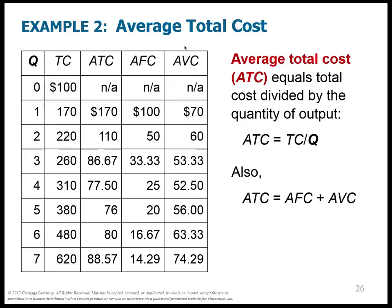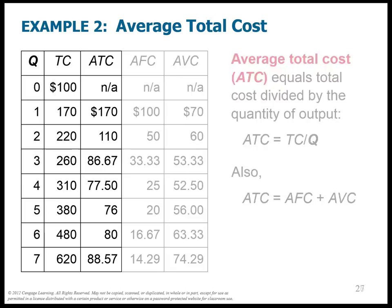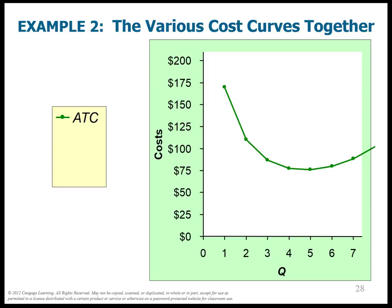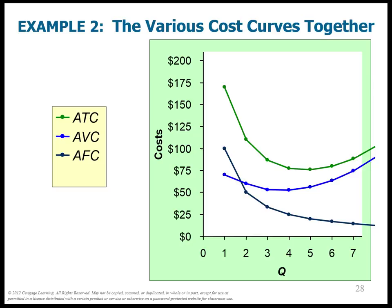The ATC curve is U-shaped as well. Let's put the AVC curve on the same graph. Remember, the difference between AVC and ATC at any point is the average fixed cost — and notice it's getting closer and closer together because the average fixed cost is decreasing. Adding the marginal cost curve, it comes through the middle of these curves. This is all the cost curves we need to pay attention to on the graph together.